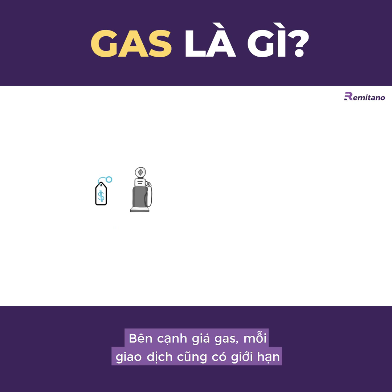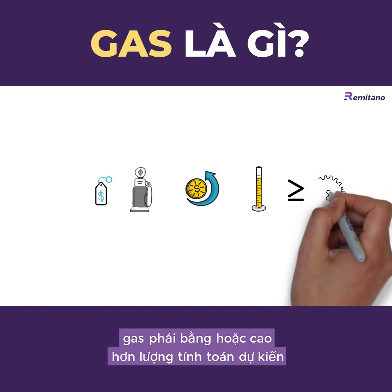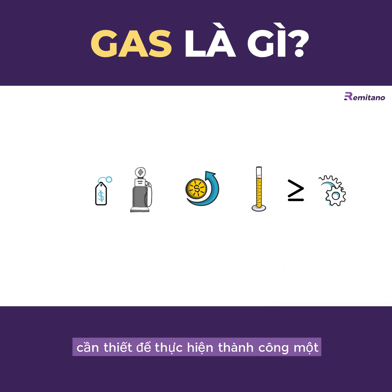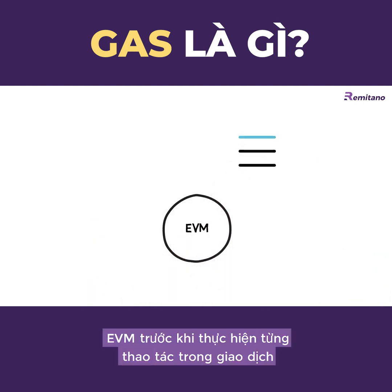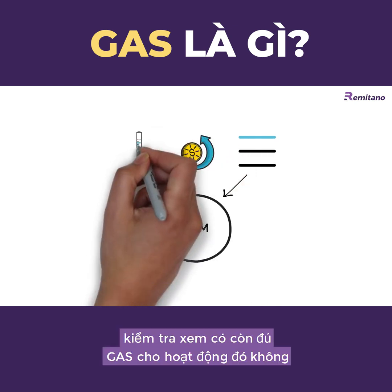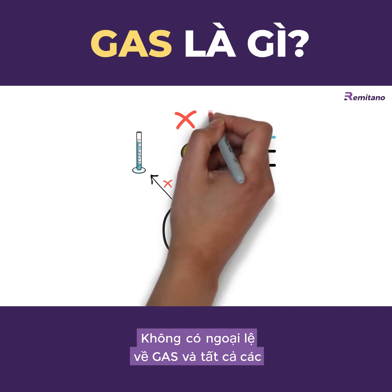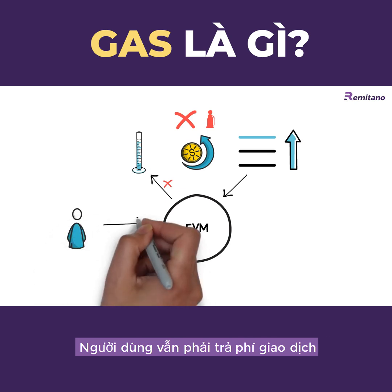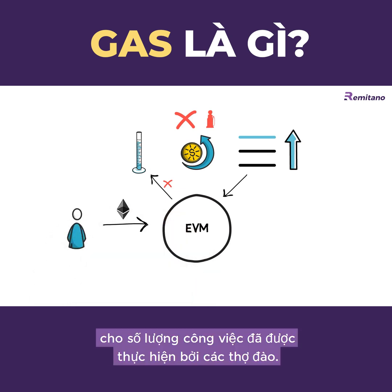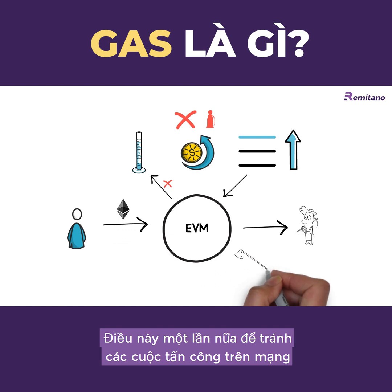Besides the gas price, each transaction also has a gas limit that must be equal to or higher than the anticipated amount of computation needed. Before executing each operation, the EVM checks if there is enough gas left. If not, the whole transaction is reverted with an out-of-gas exception and all state changes are rolled back. The user still pays the transaction fee for the amount of work done by the miner, even if the transaction fails — again to avoid attacks on the network.